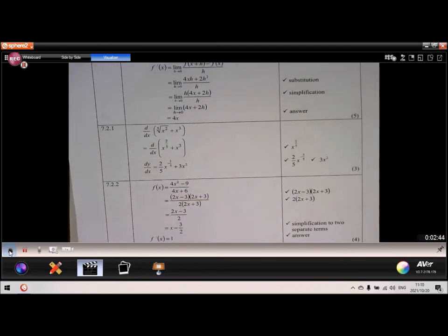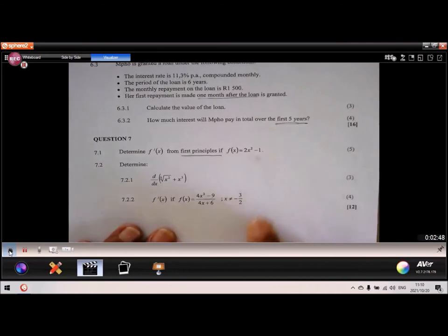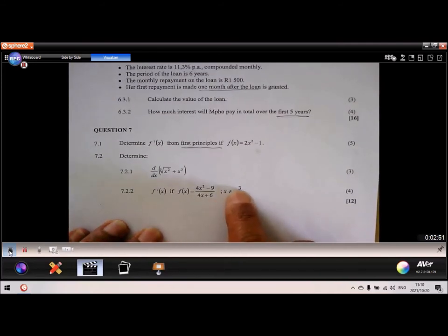Then the last one, this one here. x cannot be minus 3 over 2, because if we substitute that into the denominator, you get a 0. And division by 0 is not allowed. But I see a fraction. So I need to get rid of the fraction.